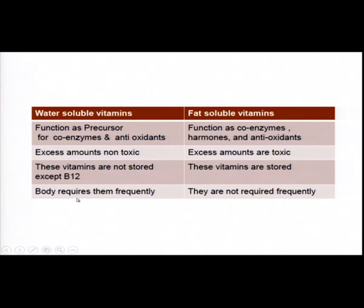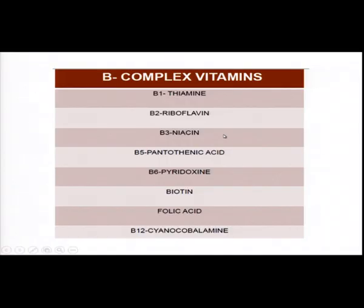Our body frequently needs a dose of water soluble vitamins, and most vegetable sources are a rich source of these. Meat products are also very essential in providing water soluble vitamins. So far we have covered thiamine, and today I am going to explain niacin.